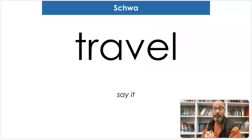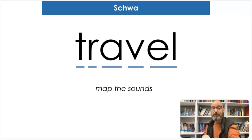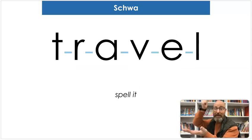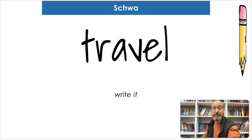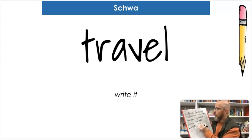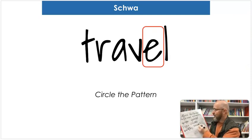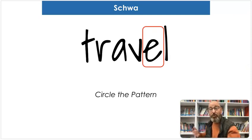Our next word is 'travel.' Say travel. If you're going somewhere, you're traveling. Map the sounds: T-R-A-V-L. Travel. Spell it: T-R-A-V-E-L. Travel. And let's write it: T-R-A-V-E-L. And where's our schwa? That's right — in the E. If you ever hear that '-ul' sound at the end with the vowel, that's always a schwa.